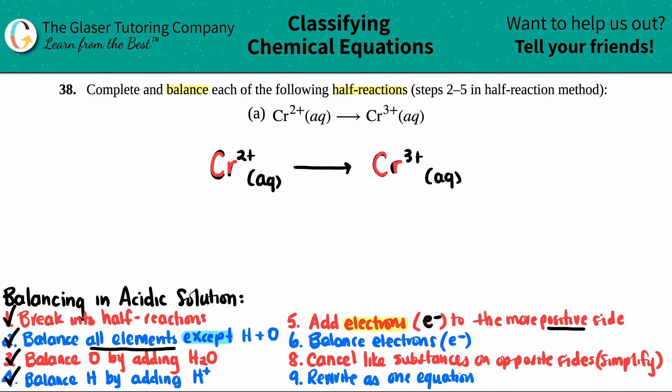Now, how do we do that? I like to put a barrier here just to make sure that I don't cross paths. Whatever is on my reactant side stays on my reactant side. And whatever is on my product side stays on my product side.